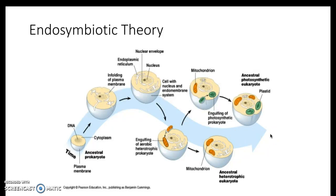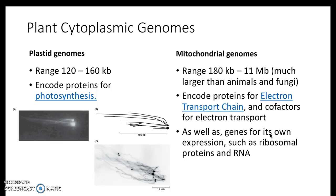As was answered in class correctly, the genome is all the hereditary material — genes and non-genes — and we'll get into that structure after we talk about the cytoplasmic genomes. So this is a slide we saw: plant cytoplasmic genomes. We have the plastids on the left, mitochondrial on the right.